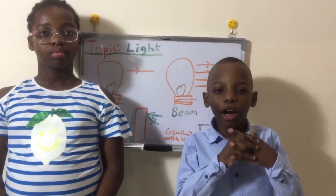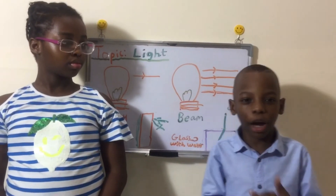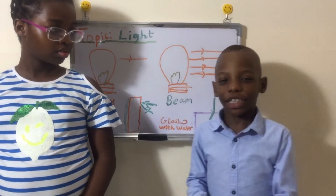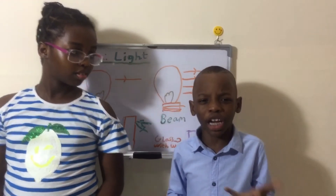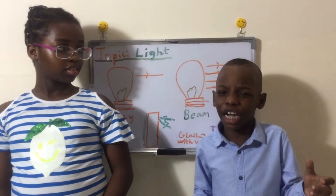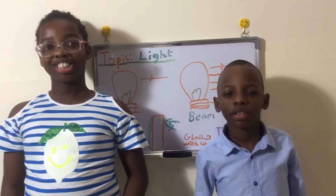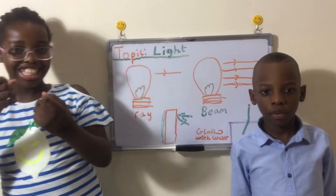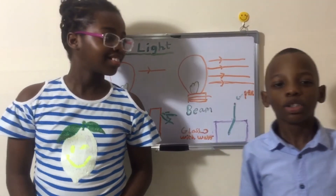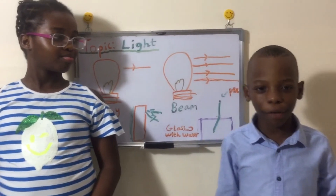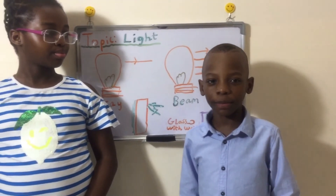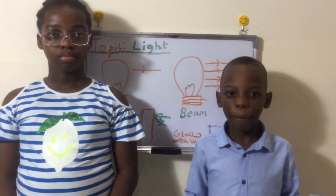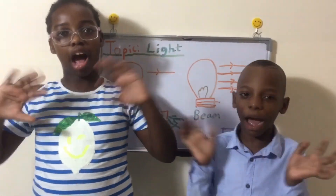So the answer to the riddle is light — or sound — because both are energy, and energy cannot get wet. Although if light goes into water, it will bend a little. We have come to the end of our video. Thanks for watching — please subscribe and ring the notification bell to watch more of our videos. Bye guys, and have a happy day!